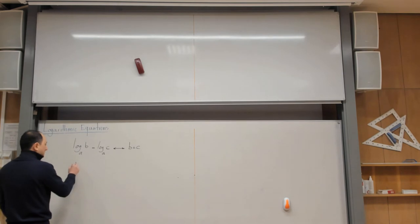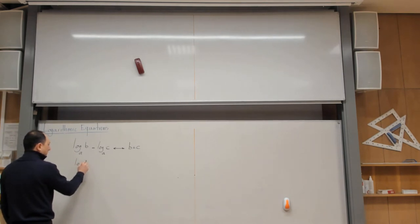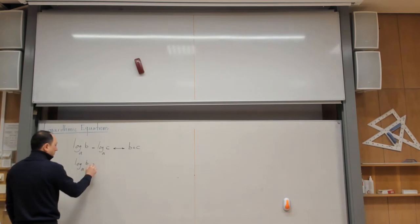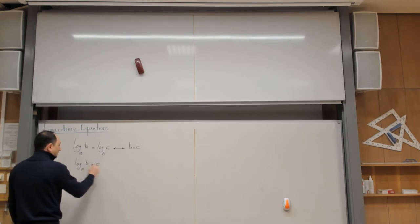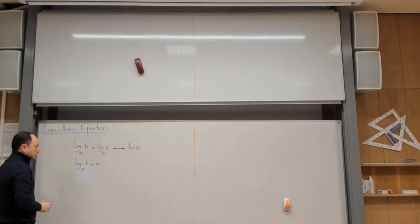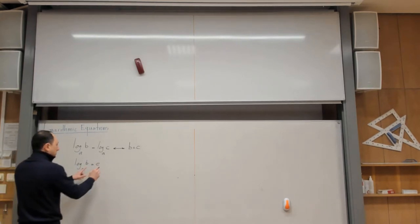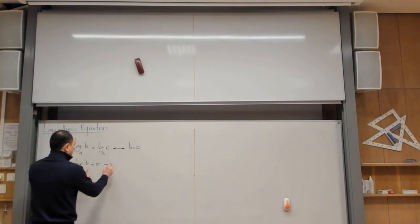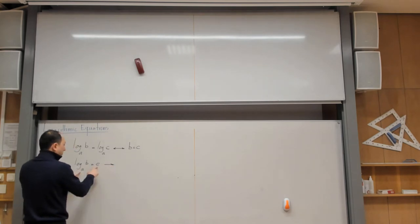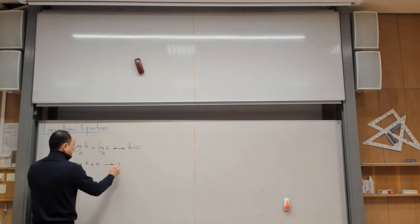You also need the definition of the logarithm. If log_a(b) = c, that's also useful because you can immediately use the definition and say a to the power c is b, and then you get rid of the logarithmic sign.